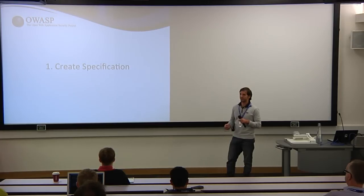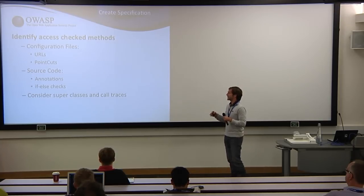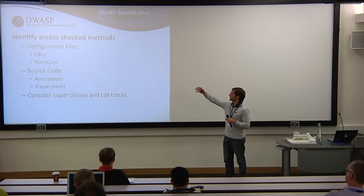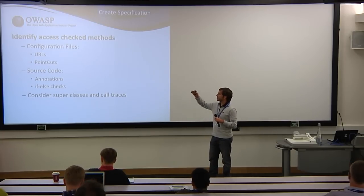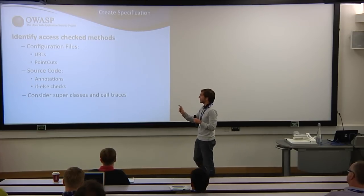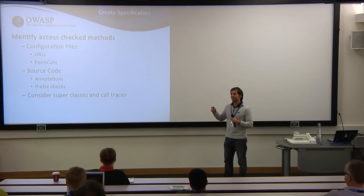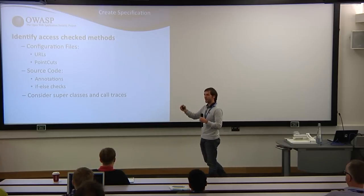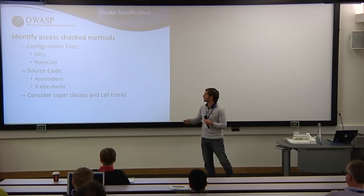The first part of creating the specification is identifying all methods protected with access checks. We started with Java only, currently working with Spring Security and Apache Shiro. These frameworks protect code via URL access checks, aspect-oriented programming with pointcuts, annotations throughout the code, or programmatic if-else checks. We also must account for inheritance: if a function calls another function, the second inherits the same protection level, so we track the call chain.